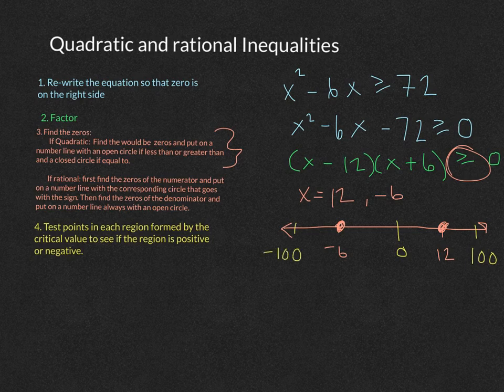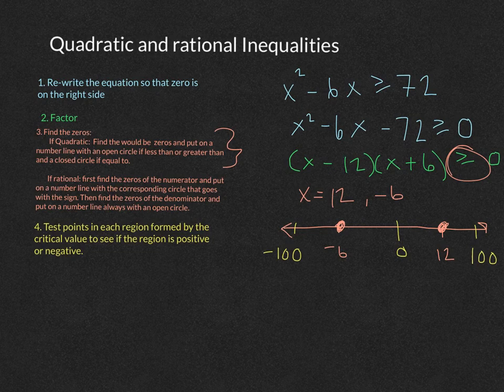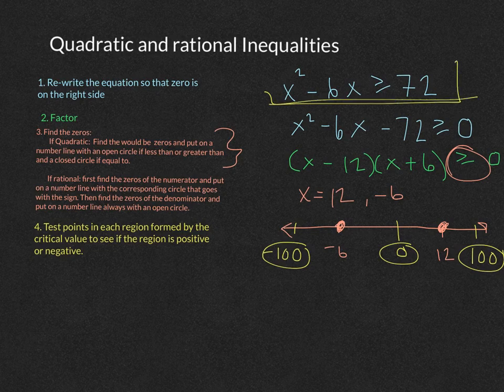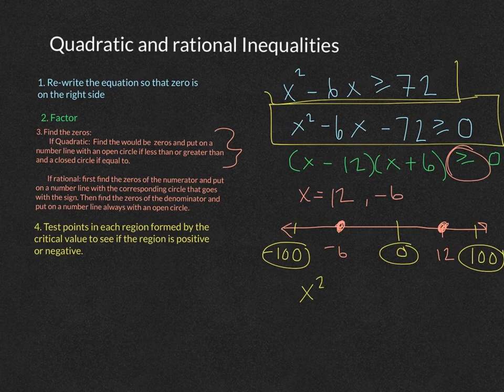I like to pick extreme values because then you don't have to find the exact value. You just need to see if the region is positive or negative. So I'm going to plug these values here into the original equation up at the top. Actually, let's do the one where we're solved for zero. So I'm going to plug them into x squared minus 6x minus 72.